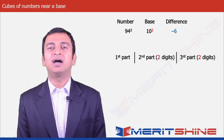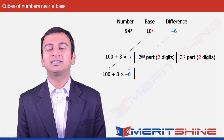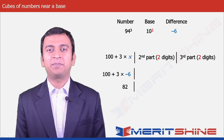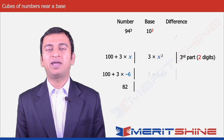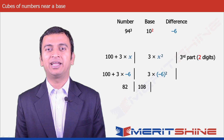The first part would be 100 plus 3x, which gives us 100 plus 3 times minus 6, which is 100 minus 18, giving us 82. The second part would be 3x², which is 3 times (−6)² = 3 times 36, giving us 108.